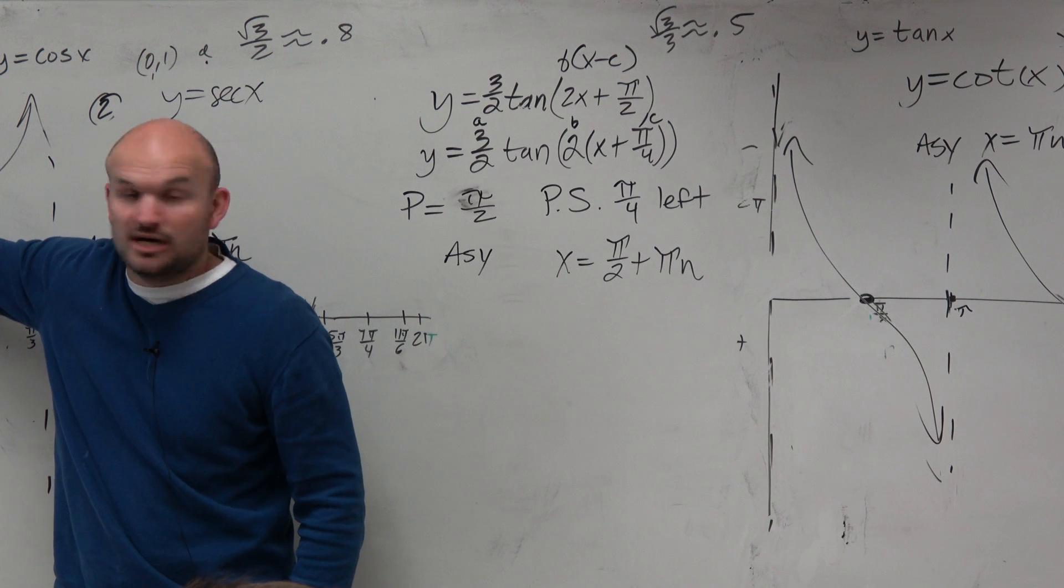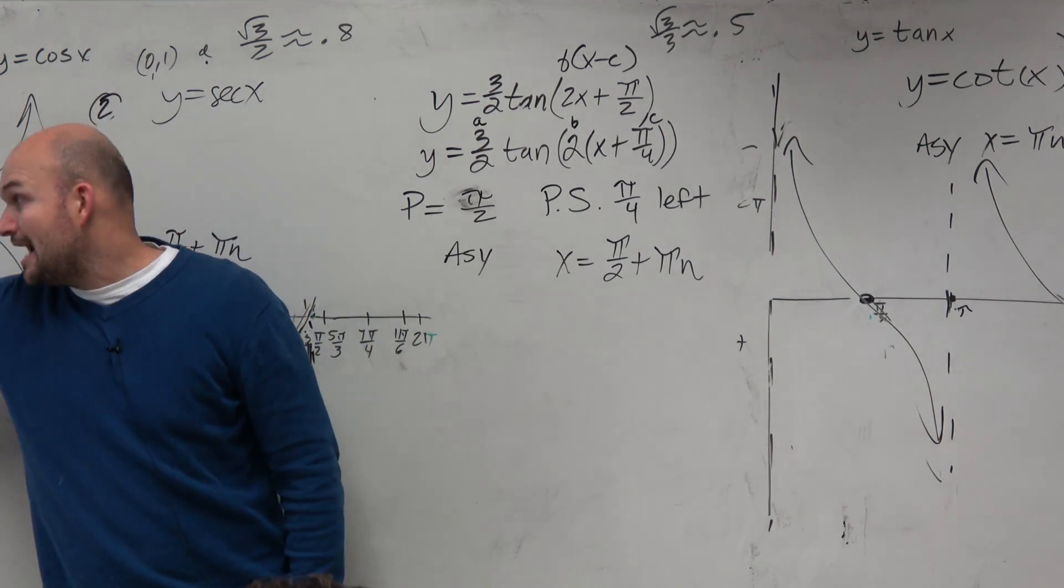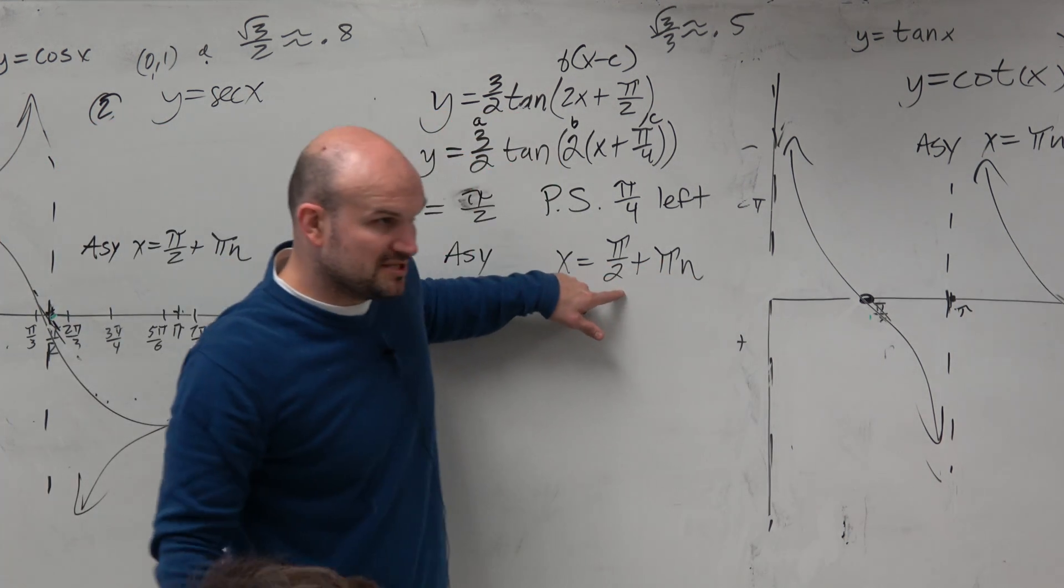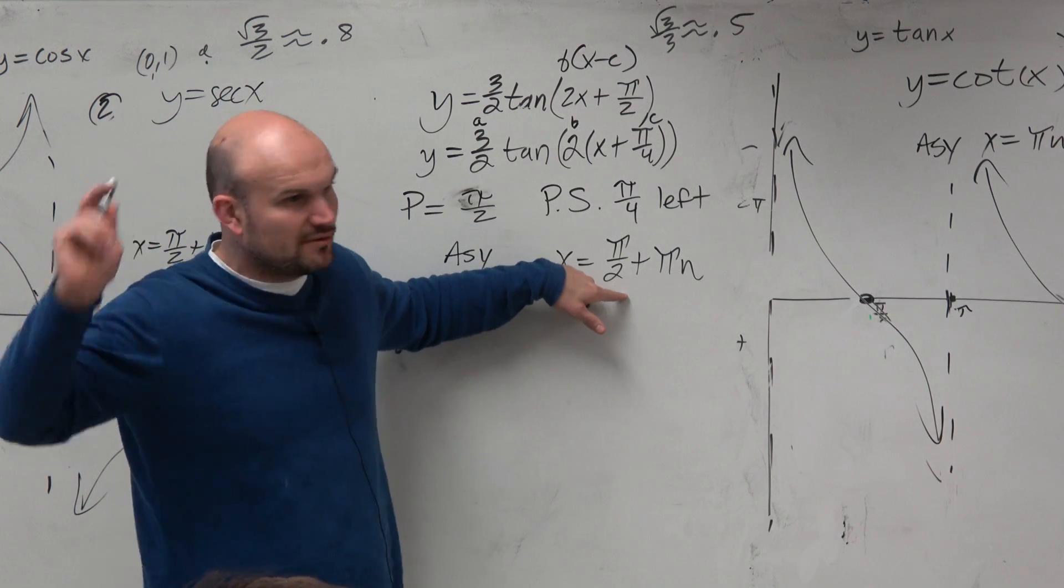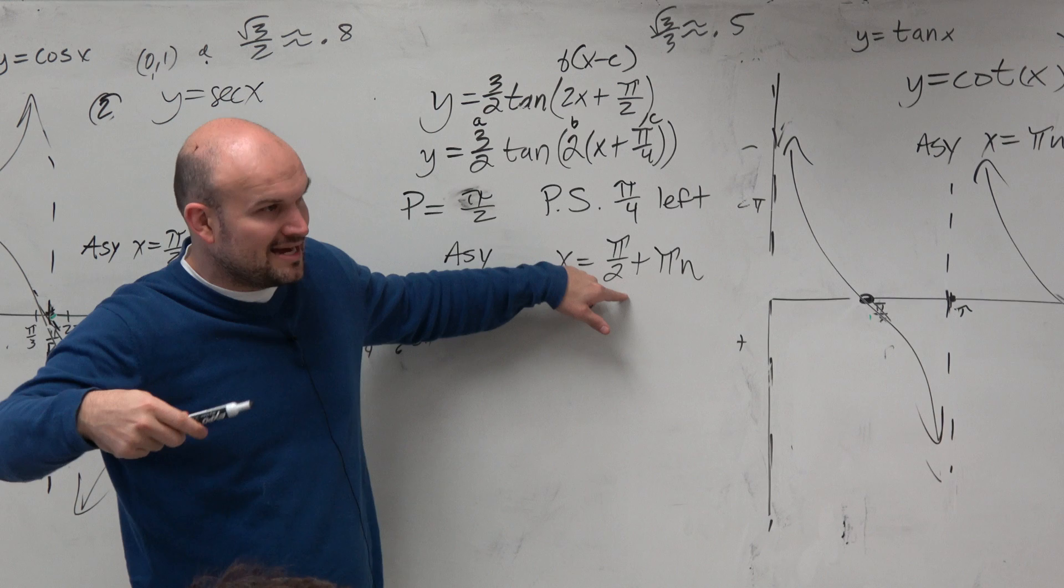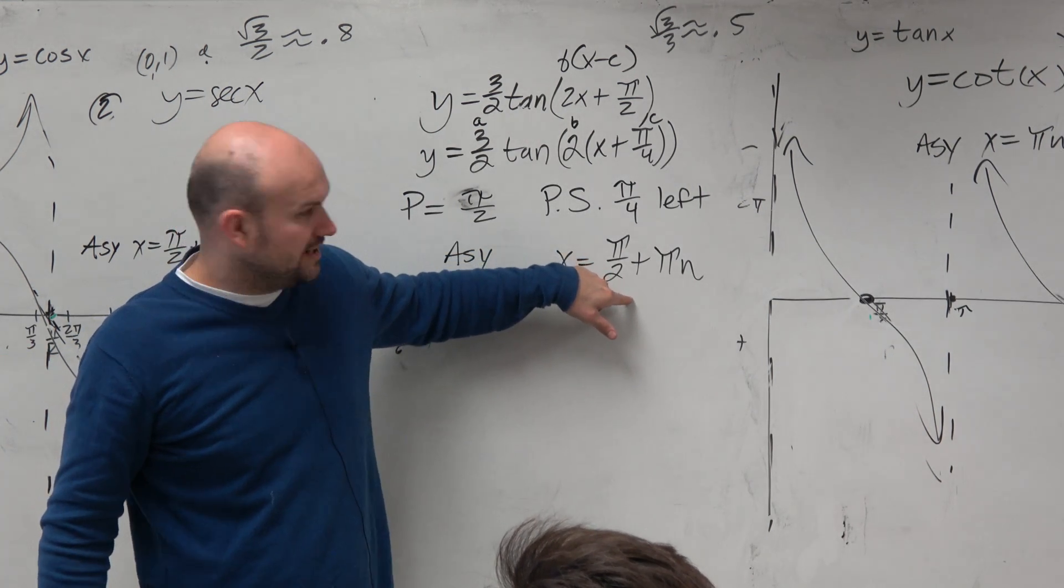1 over 0, right? At pi halves. And then to get to the next undefined value, which is 3 pi halves, how far do I have to travel? Pi. And if I travel pi again, I get to the next undefined value. So pi halves plus pi n is not something you need to memorize. You can just refer back to that every time. Eventually you'll do it so many times, you're like, I already have this memorized now.